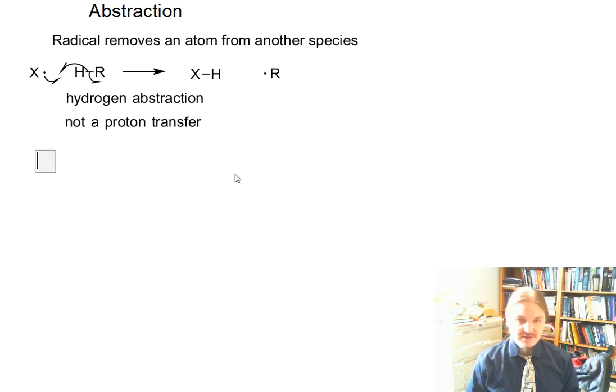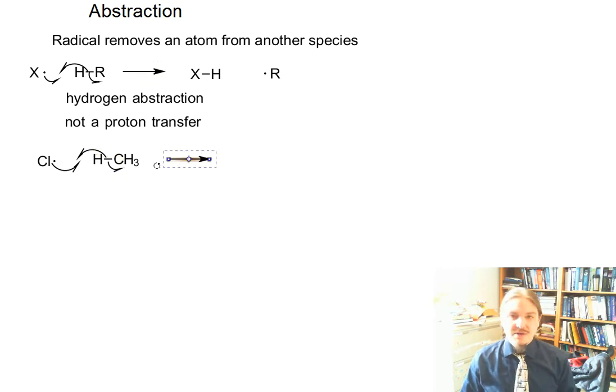So let's look at a more specific example of this hydrogen abstraction, which is part of the mechanism of the radical halogenation of methane. So here we have a chlorine radical and the carbon hydrogen bond and methane is going to break. One electron is going to go with the hydrogen to form a new bond with chlorine. And the other one is going to go to the carbon and the methyl group. And so we will form hydrogen chloride and the methyl radical.